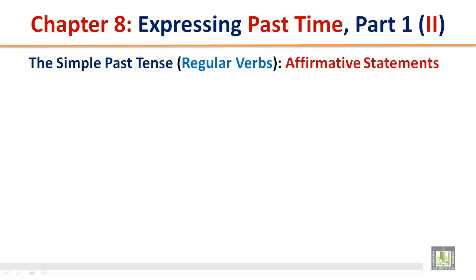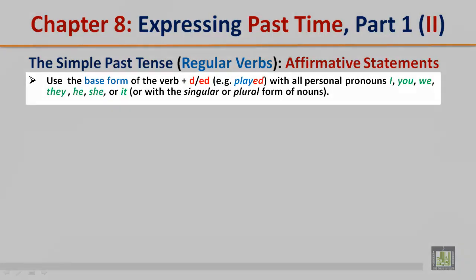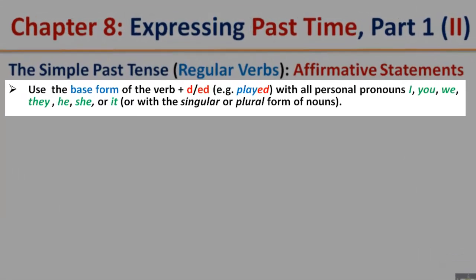The simple past tense — regular verbs, affirmative statements. Use the base form of the verb plus d or ed. For example, 'played' — 'play' is the base form, plus d or ed. This applies with all personal pronouns: I, you, we, they, he, she, or it, or with the singular or plural form of nouns.